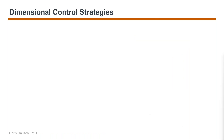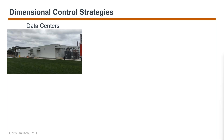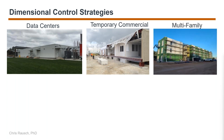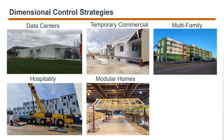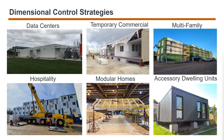As a result, there's a need to come up with dimensional control strategies to ensure our projects perform in a suitable manner. Some of the projects I've worked on directly or indirectly include modular data centers, temporary commercial buildings, multifamily, hospitality, modular home building applications, and accessory dwelling units. Across these, I've realized that there is a big need to control dimensions and geometry to ensure projects perform suitably and are delivered on time and on budget.